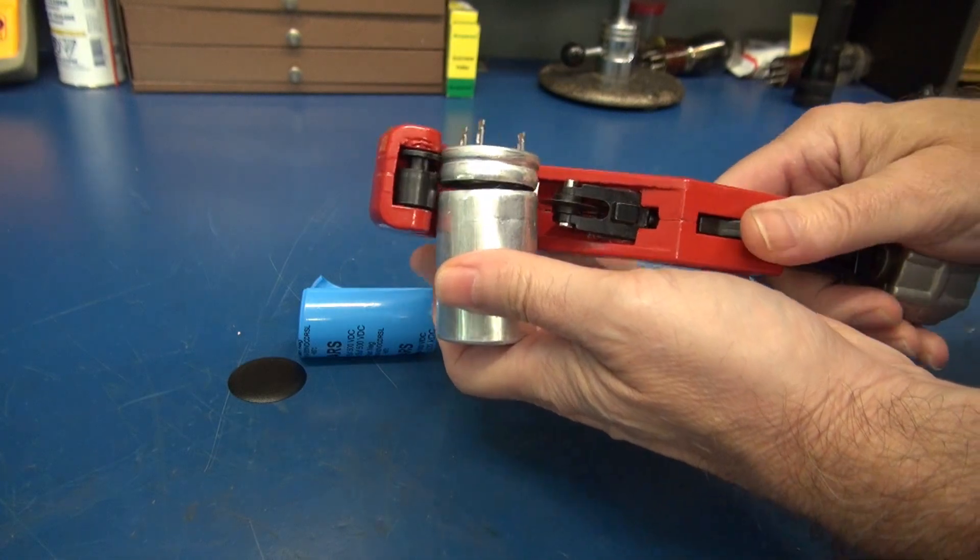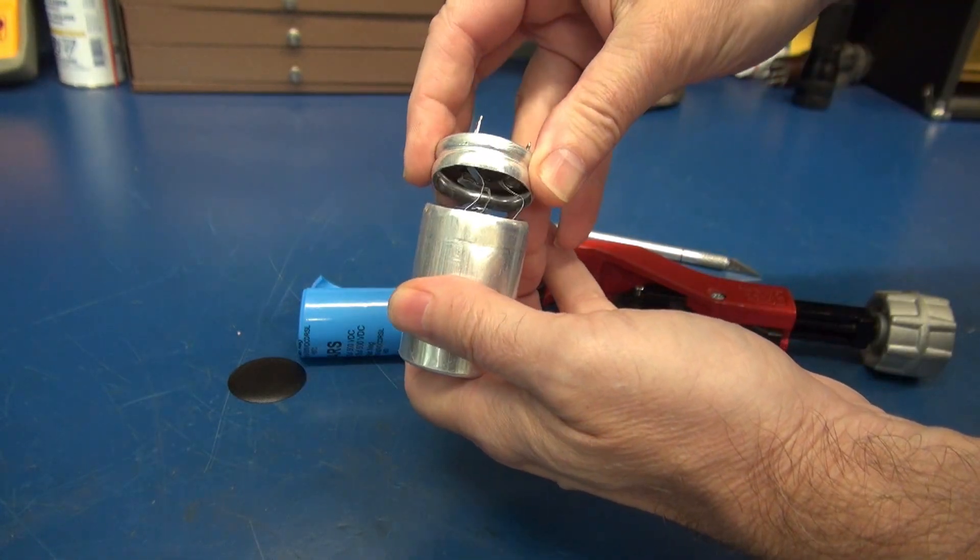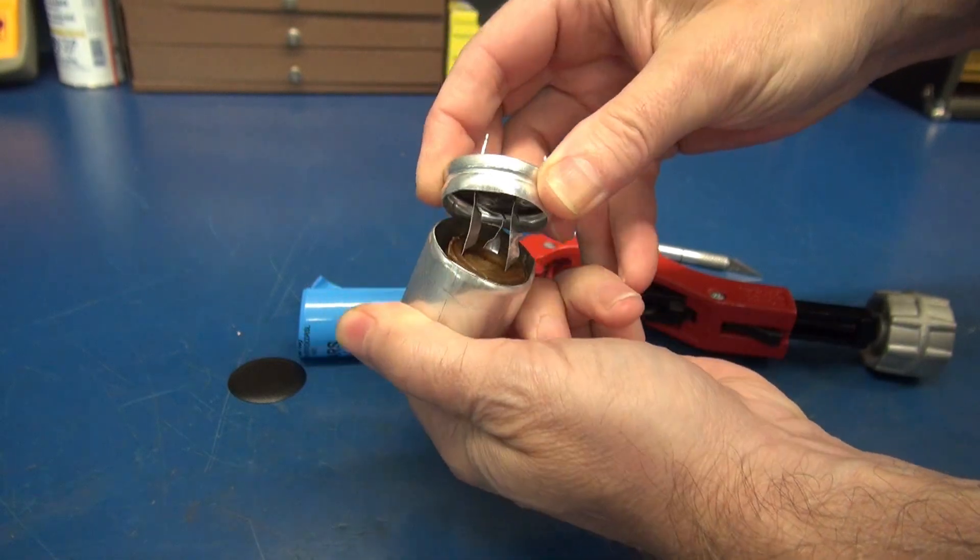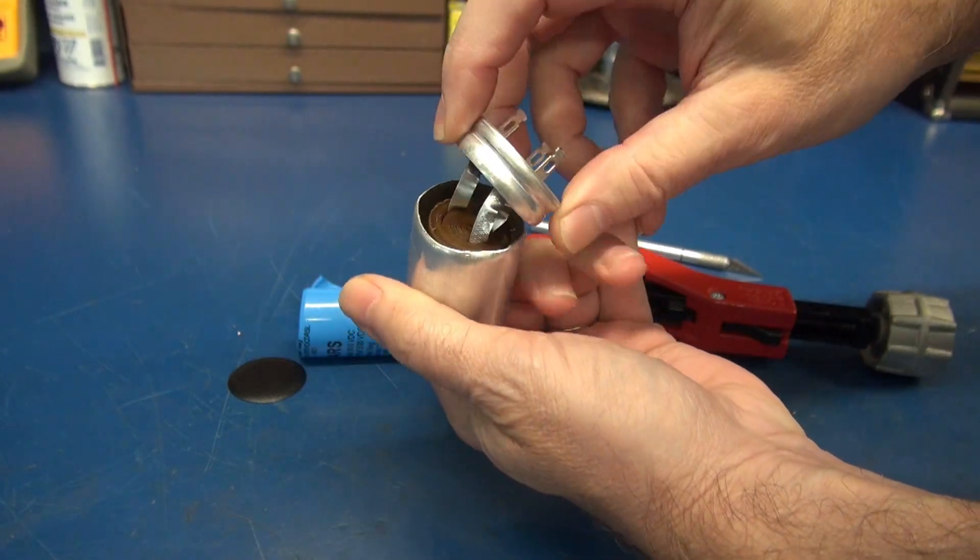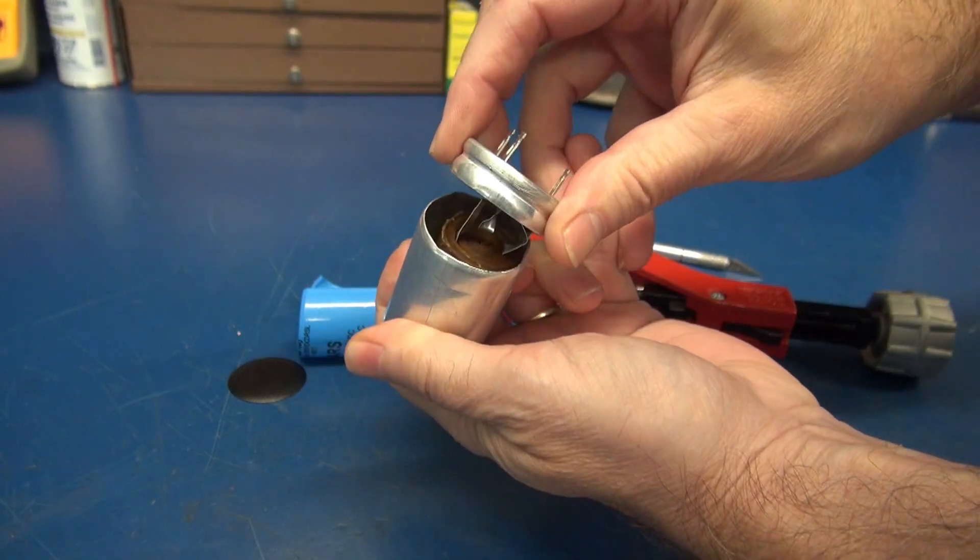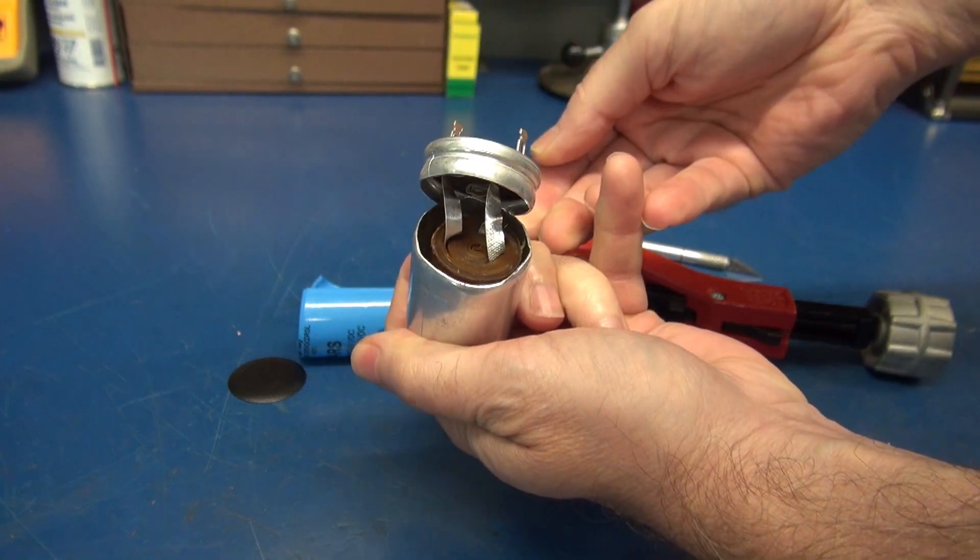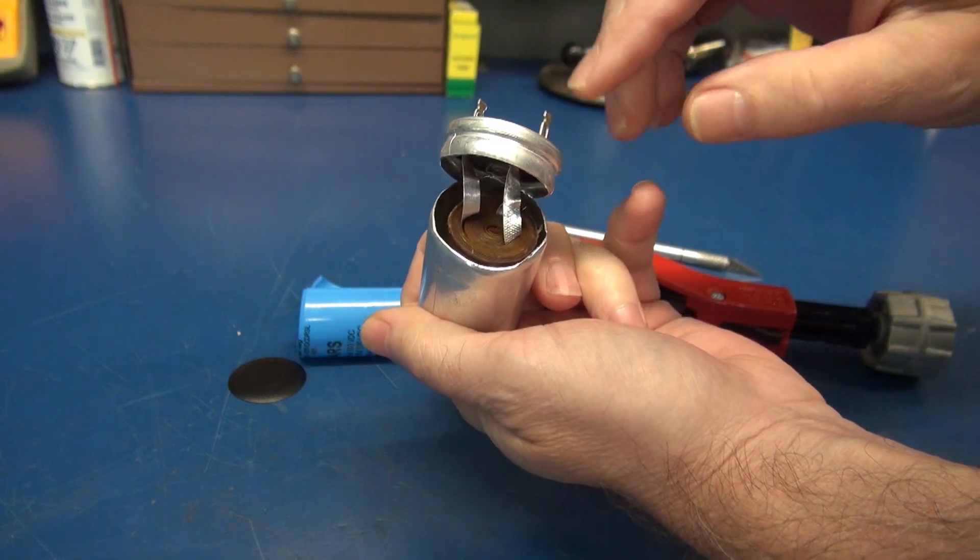Time to see what's inside of the ARS capacitor. Look at there. That appears to be made the old fashioned way. I expected to see some individual caps in here, but that's not the case.